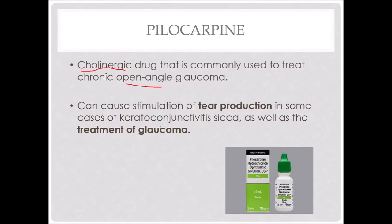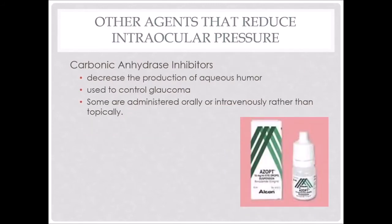Carbonic anhydrase inhibitors, which we talked about in the renal discussion as a diuretic, decrease the production of aqueous humor to control glaucoma. Sometimes we can actually give it orally or IV rather than topically.